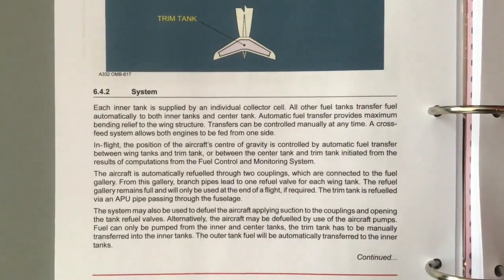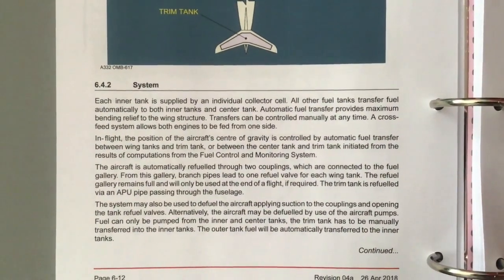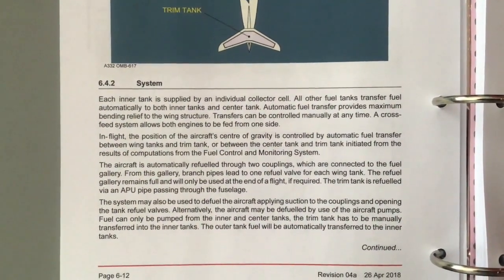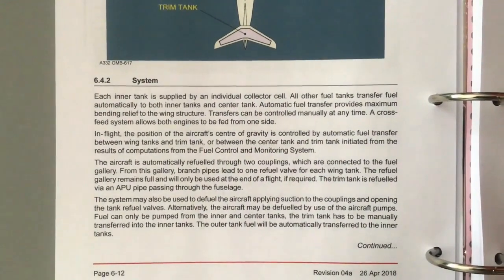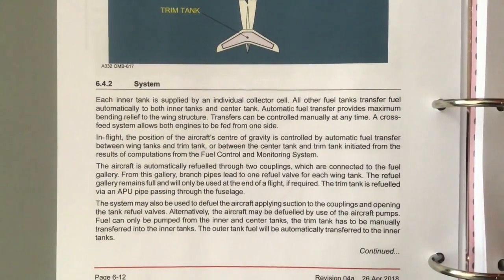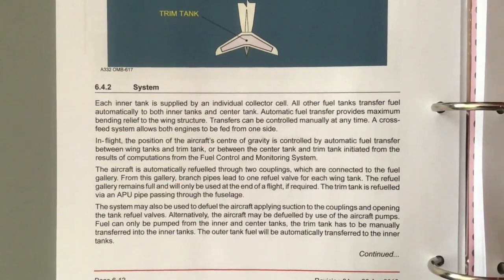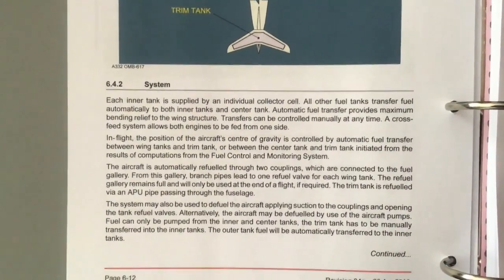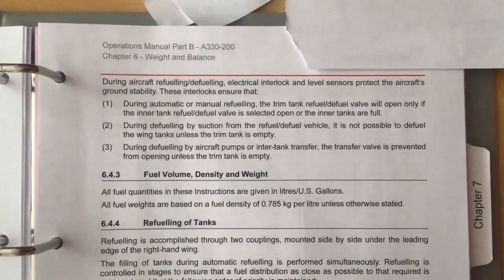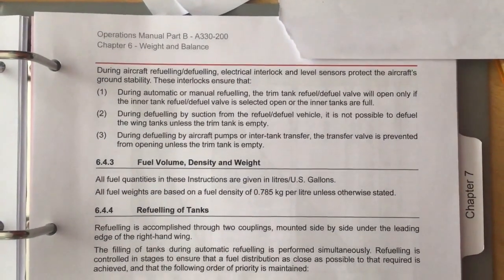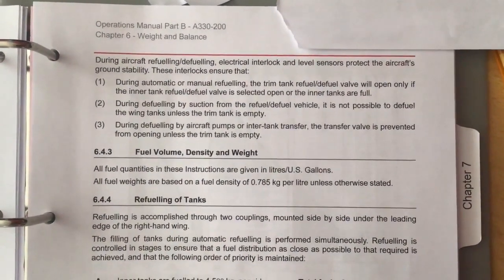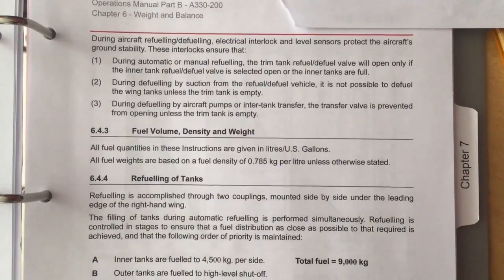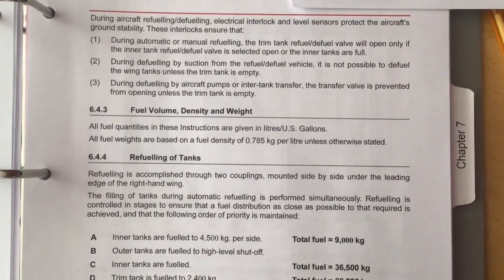The A330 series 200 aircraft is approximately 58.82 meters in length. It has a range of 13,450 kilometers. It has a maximum takeoff weight of 242 tons and it can seat up to 406 people in a single class configuration.